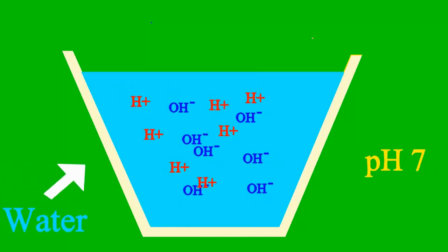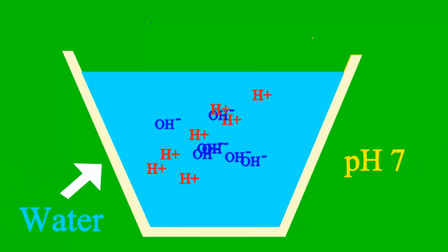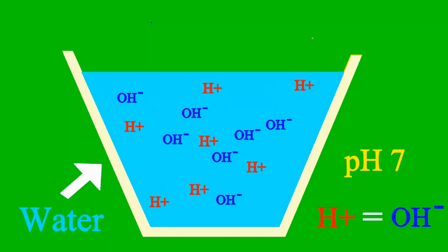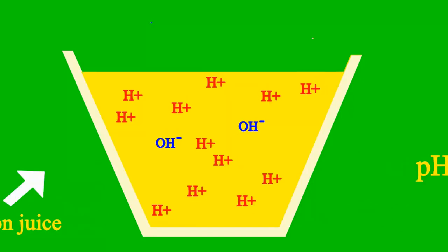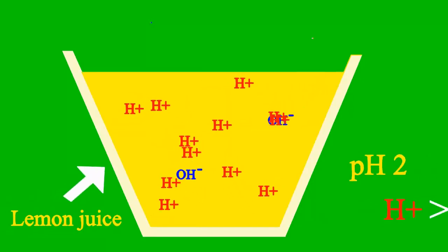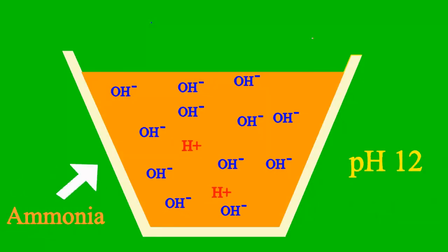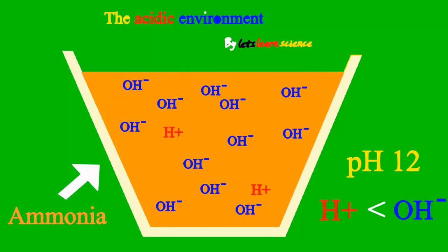When the pH is 7, the sample is neither an acid nor a base. Less than 7 means it's an acid, and more than 7, it's a base all the way.